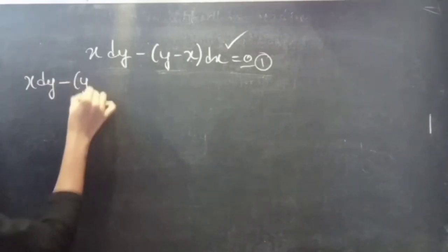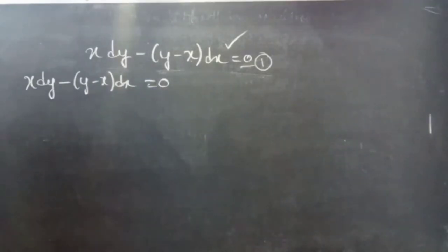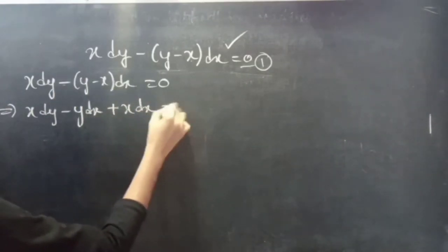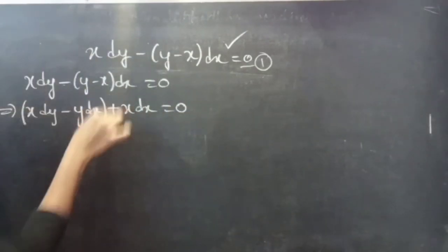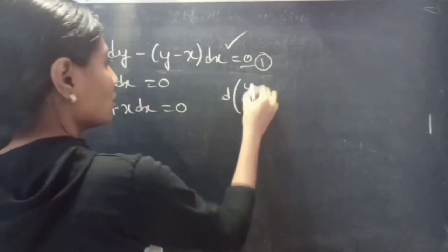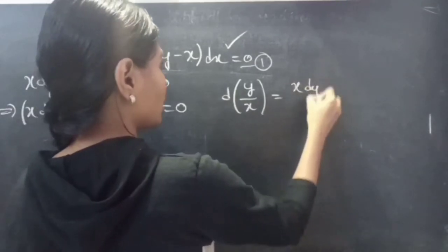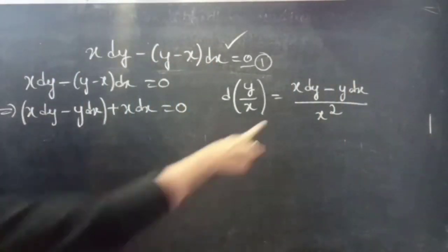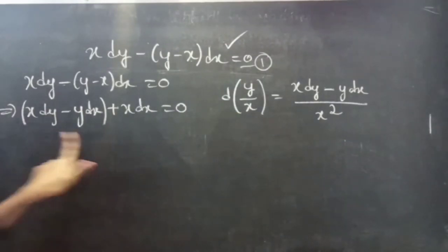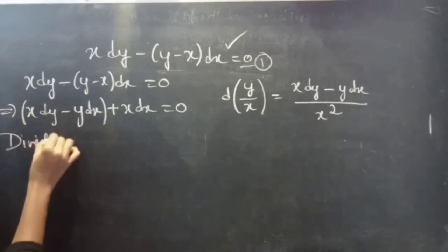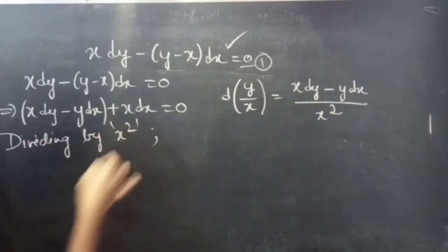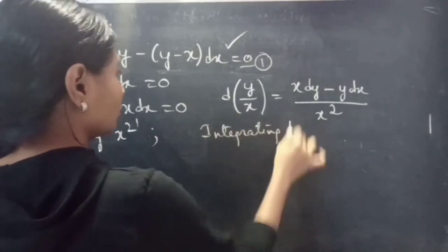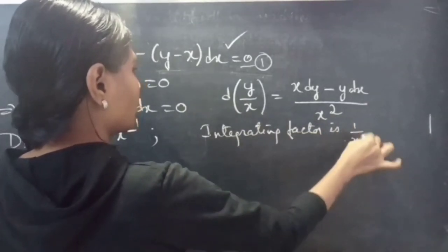So: x dy minus (y minus x) dx equals to 0, which gives x dy minus y dx plus x dx equals to 0. We know that d(y/x) equals (x dy minus y dx) divided by x². So in order to apply this formula, we need x² in the denominator. Dividing by x², our integrating factor is 1/x².